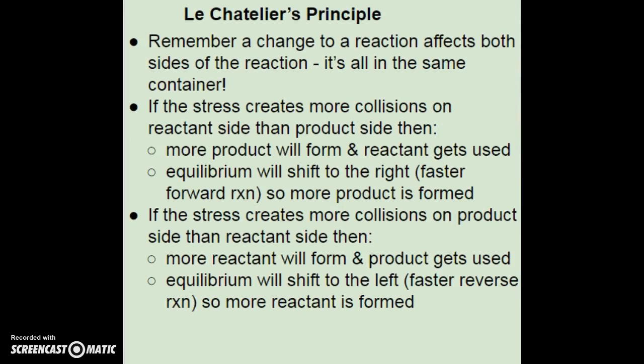A change to the reaction affects both sides of the reaction since it's all in one container. Putting pressure on the container puts pressure on both reactant and product sides. Adding heat increases the temperature for both reactants and products. If the stress creates more collisions on the reactant side than the product side, more product will form, reactant gets used, and the equilibrium will shift to the right — the forward reaction is favored. If the stress creates more collisions on the product side than the reactant side, more reactant will form, product gets consumed, and the equilibrium will shift to the left — the reverse reaction is favored.